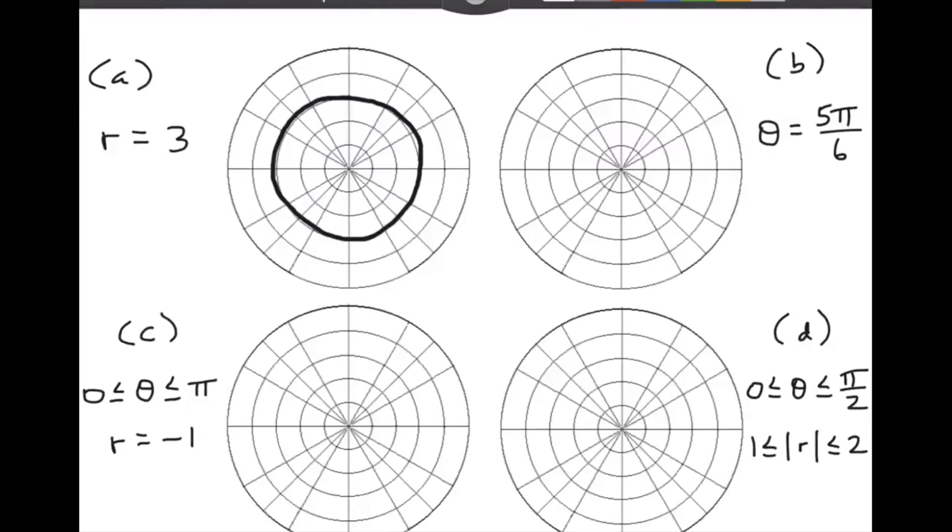Next, we have theta equals five pi over six. So where is five pi over six? Well, it is over here. So it would definitely include all of these points. But then remember, the value of R can be negative. So it would also include these points over here. So theta equals five pi over six is the equation of a line in polar coordinates, a line that passes through the origin.